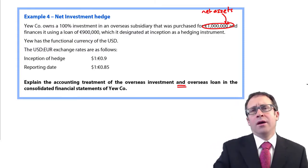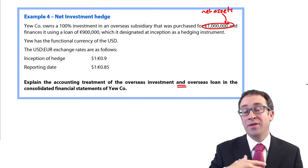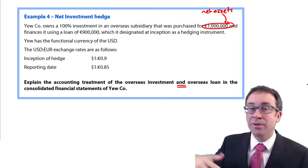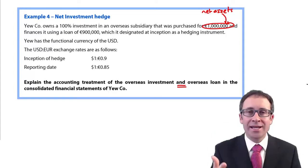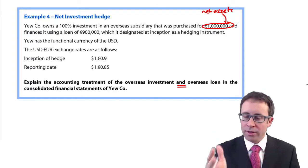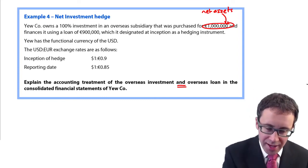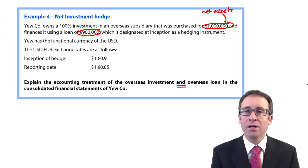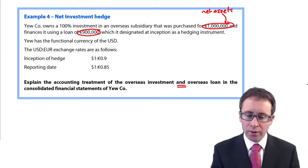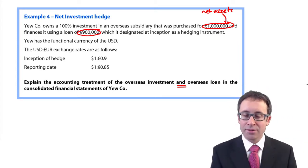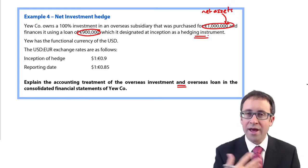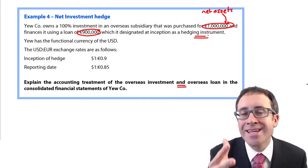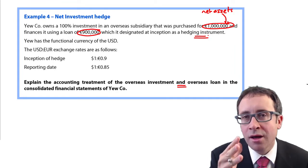The net assets at acquisition will likely differ at each reporting date, but in this example I'm keeping the net assets at one million euros throughout. We then enter into a hedging transaction, taking out a loan of 900,000 euros, which is designated at inception as a hedging instrument. Therefore, the rules of hedge accounting apply, and any gains and losses on translation of the loan go to OCI — which is against the normal rules for an overseas loan.